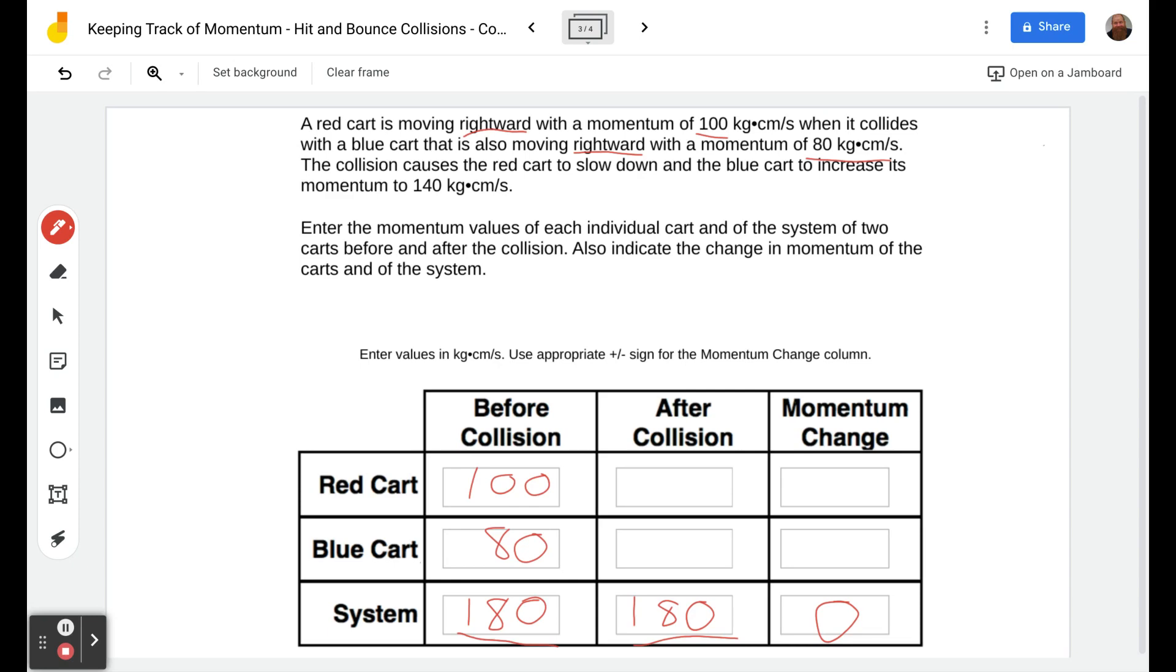Let's look at what happens to them individually. The red cart slows down—we don't know how much. The blue cart increases its momentum to 140, so it's telling us the momentum after collision is 140. We can get the change in momentum because before collision it was 80, then it changed to 140, so it increased by 60—that's positive 60.